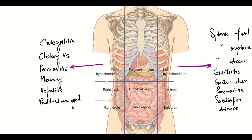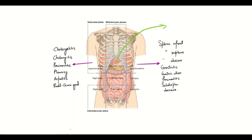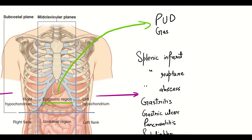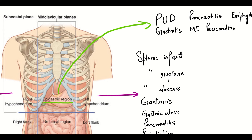The epigastric region has the esophagus, the stomach, the aorta and pancreas. Also, pain is referred to the epigastric region in case of an MI. So, the epigastric region will be associated with peptic ulcer disease, gastritis, pancreatitis, MI, esophagitis, pericarditis, ruptured aortic aneurysm and GERD.